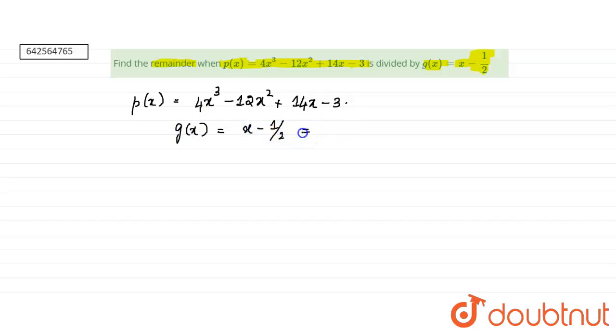If we take X minus 1 by 2 is equals to 0, then we get X is equals to 1 by 2. Now, if we substitute 1 by 2 in this P of X, then P of X is giving the remainder.